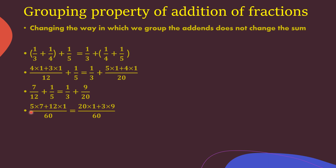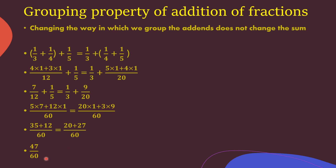Now solving: 5 times 7 is 35, plus 12 ones are 12, giving 35 plus 12 by 60. On the right side, 20 plus 3 times 9 is 27, giving 20 plus 27 by 60. So 35 plus 12 equals 47, and 20 plus 27 also equals 47 — both give 47/60. In both cases we get the same answer. That is the grouping property of addition of fractions.